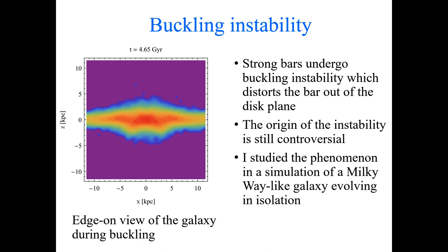The origin of this instability is still controversial. There are essentially two schools of thought: some people think it's a so-called firehose instability, related to the velocity dispersion of the stars in the bar, while others think it's more related to particular resonances in the bar. I relate myself to this second school — I think it's related to resonances, though it's not obvious. I will try to tell you why I think it's like this.